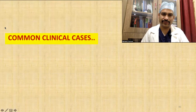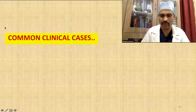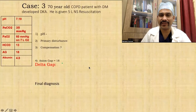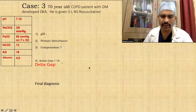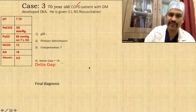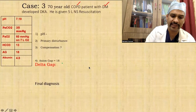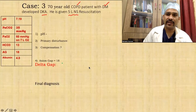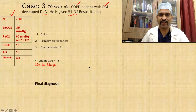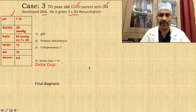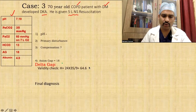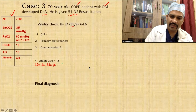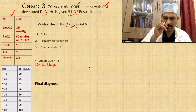Now let's look at clinical cases. Case 3: a 70-year-old male COPD patient who developed diabetic ketoacidosis and was given 5 liters of normal saline. First check ABG validity using PCO2 / (bicarbonate × 24). This ABG is valid. Now look at pH — it is acidotic (less than 7.4). The primary disturbance is metabolic because bicarb is 13, so this is metabolic acidosis.